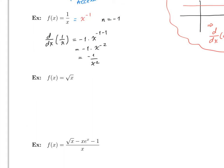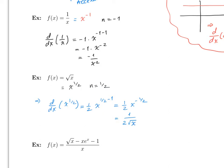What about the square root of x? We did this one already but let's redo it. Remember this is the same as x to the 1/2, so the value for n is 1/2. Hence the derivative with respect to x of x to the 1/2 will be (1/2) x to the (1/2 minus 1), which gives you (1/2) x to the negative 1/2. You can rewrite this as 1 over 2 radical x.